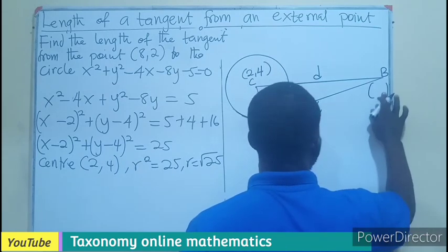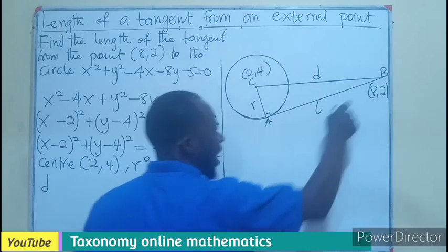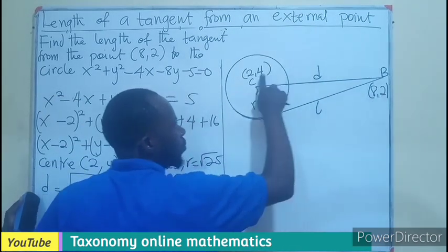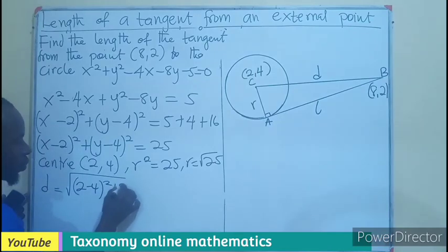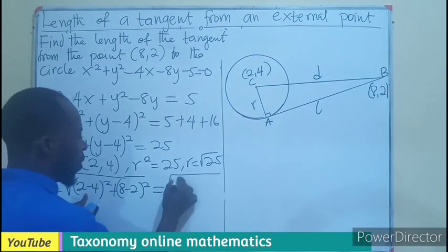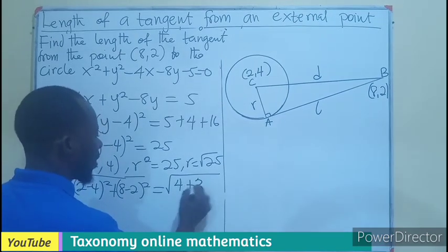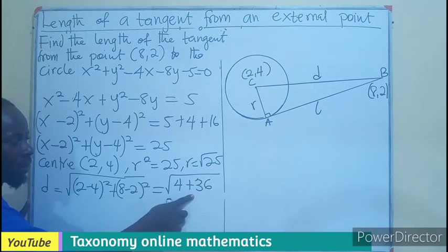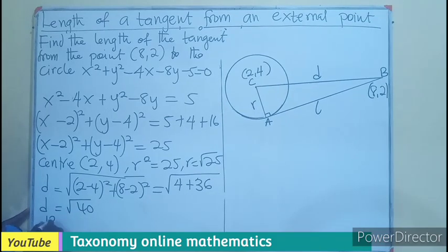Do we know the external point? Yes, we know as 8 and 2. So can I find D, the distance between the center and the external point? That would be easy to find. The distance would be the square root of 8 minus 2 all squared plus 2 minus 4 all squared. It will be 6 squared, that would be 36. This would give us negative 2 squared, that would be 4. So if we add 4 to 36, that would give us 40. The distance would be the square root of 40, and this can also be written as D squared equals 40.